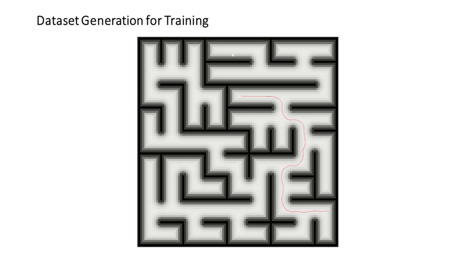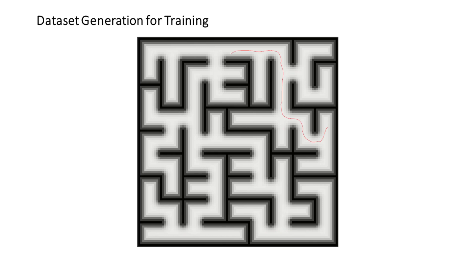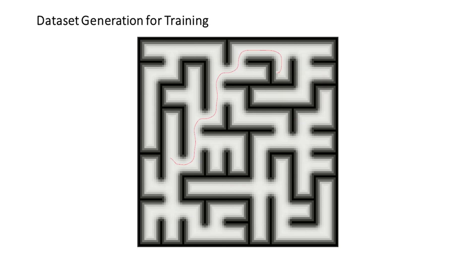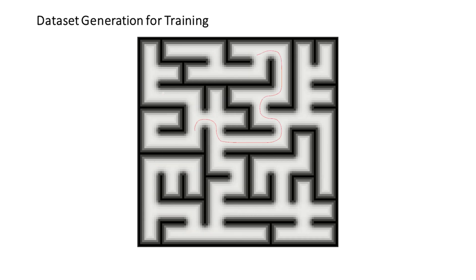To generate the dataset, we utilize Kruskal's algorithm to create random solvable mazes and the A* algorithm to generate multiple 2D trajectories from random start and goal positions on each map.